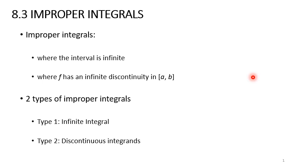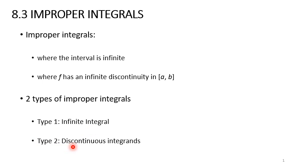The next section of this week's topic is on improper integrals. Improper integrals occur when the interval is infinite, or when the function f has an infinite discontinuity in the interval a and b. There are two types of improper integrals: Type 1 is the infinite interval, and Type 2 is the discontinuous integrand. We will go through how to identify what kind of improper integral we are dealing with.